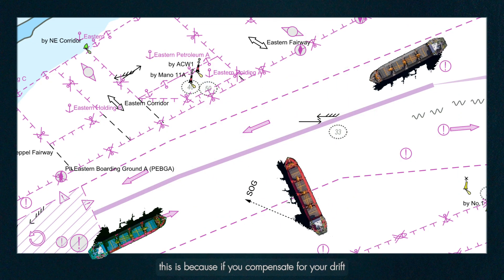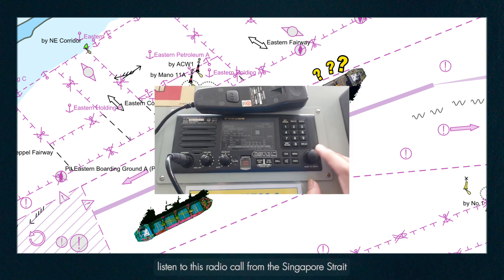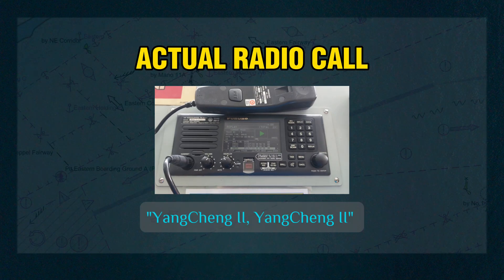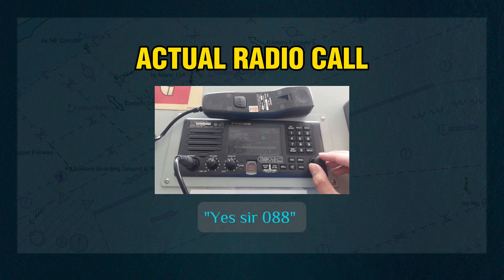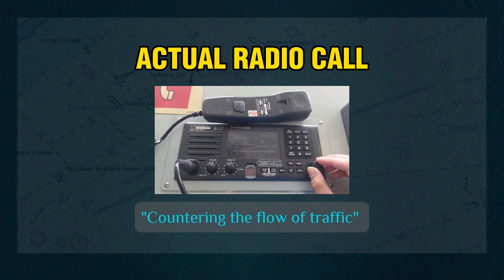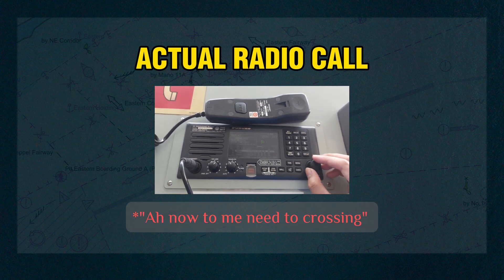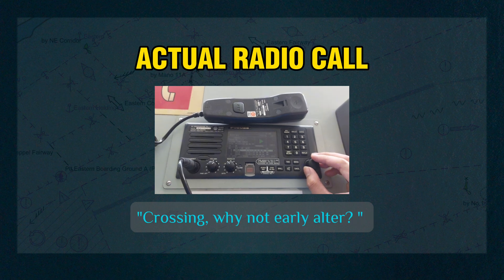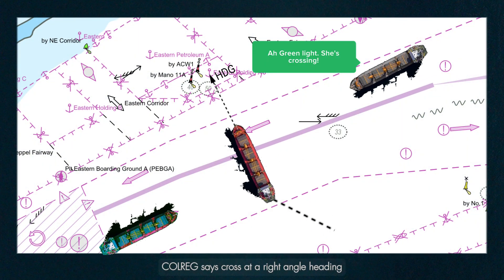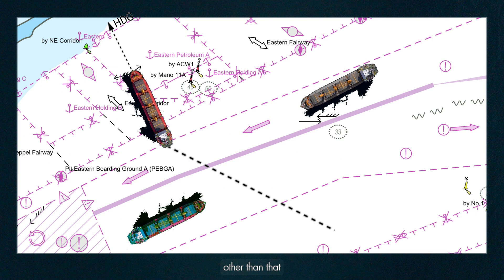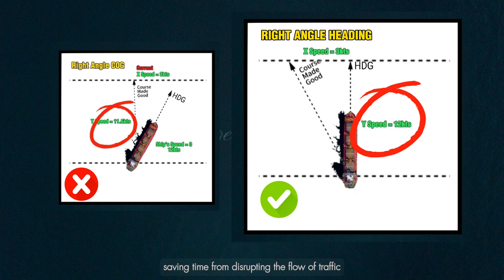But why? This is because if you compensate for your drift, then you might alter course, which could confuse the other ships about your intention. Listen to this radio call from the Singapore Strait. So to avoid that, COLREG says cross at a right angle heading. Other than that, when you cross at a right angle heading, you'll be able to cross faster, saving time from disrupting the flow of traffic.